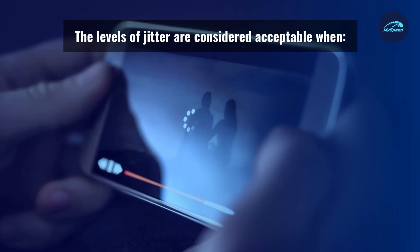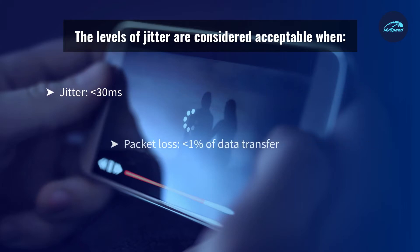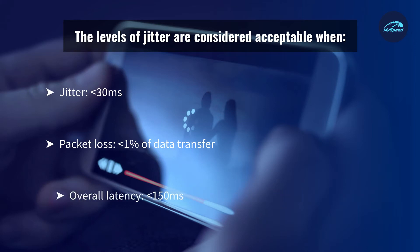As per speedcheck.org, the levels of jitter are considered acceptable when: jitter is less than 30 milliseconds, packet loss is less than 1% of data transfer, and overall latency of the network is below 150 milliseconds. In actuality, a delay of around 30 milliseconds or more can cause distortion and disruption to a call, according to RingCentral.com. For video streaming, a jitter value of less than 30 milliseconds is necessary to ensure it works efficiently. With higher jitter, it can start slacking, causing packet loss and issues with audio quality.